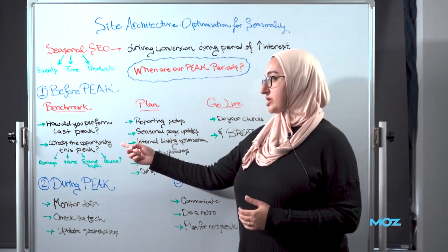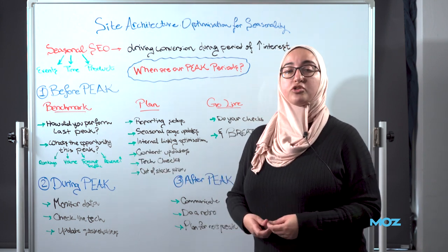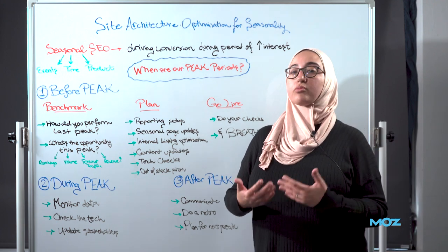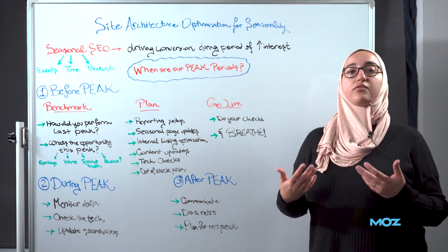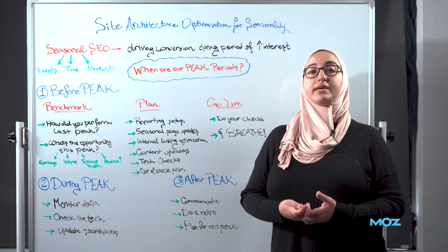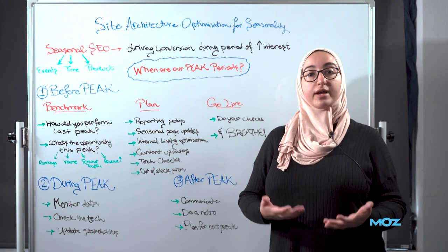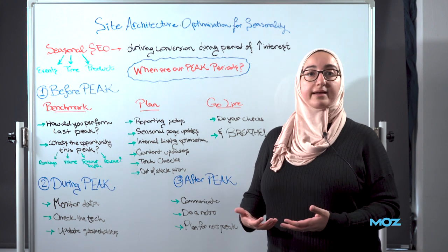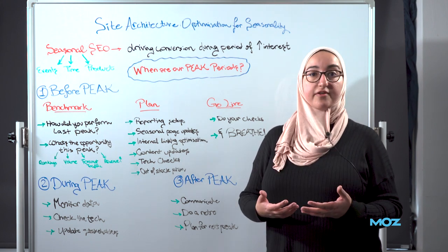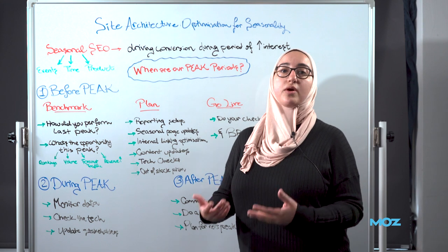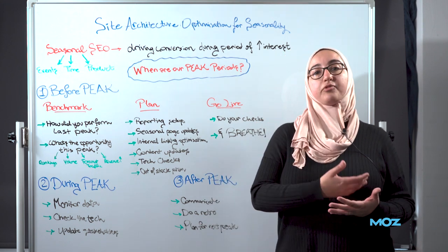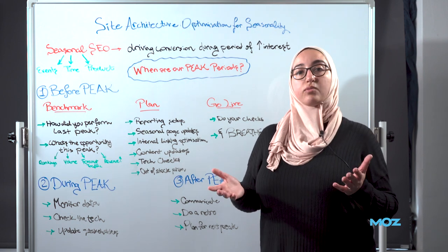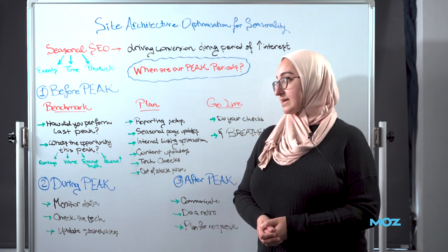The second question is: what is the opportunity this peak? For the specific peak coming up, you're usually expected to do some forecasting of what traffic and revenue are going to look like. We can do that based on current rankings, seasonal search volume, and from that we can derive forecasted traffic and predicted revenue uplift. Sharing that beforehand is very important so that stakeholders are on board and everyone is aware of what to expect.